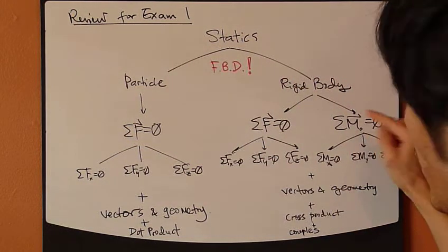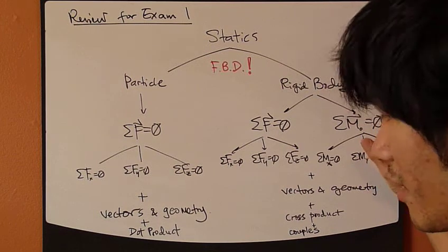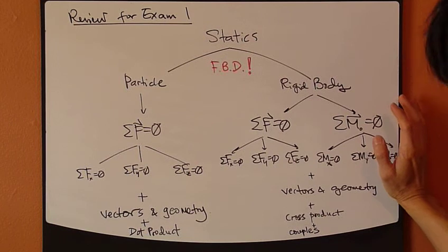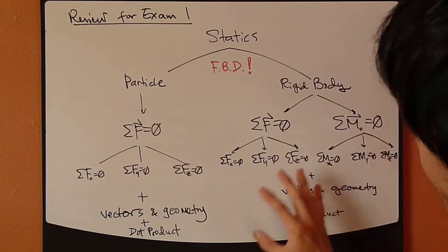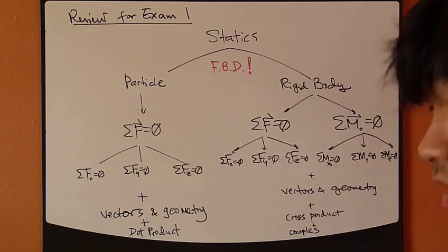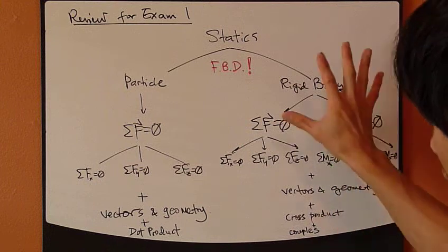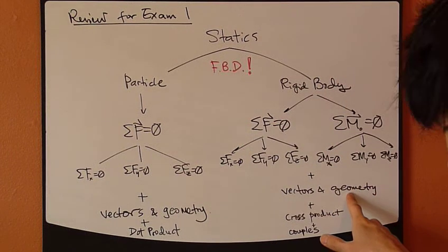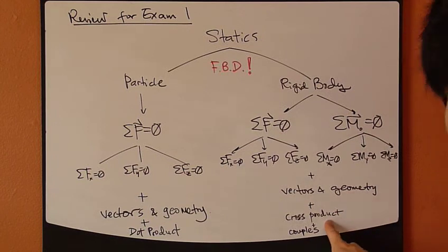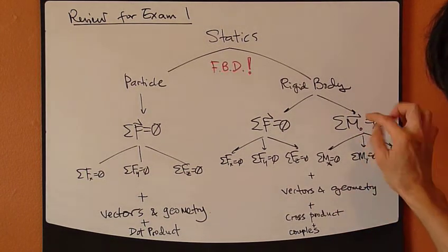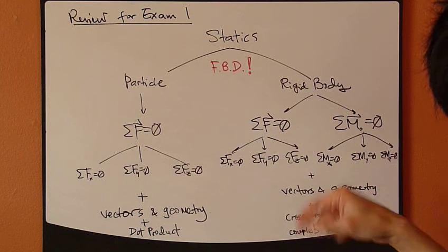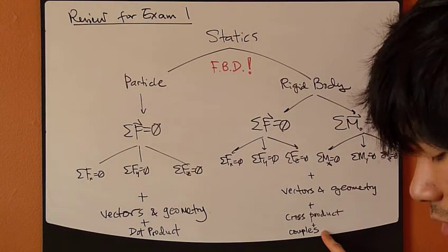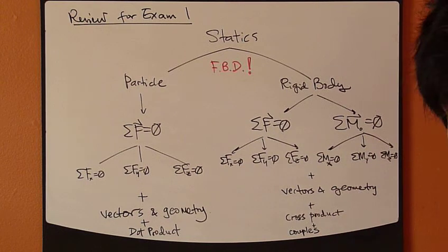And here, the major difference is moments. So, we spend a lot of time talking about moments, as well as couples. And also, a few other auxiliary things that will help you analyze rigid body problems. Again, vector properties, geometry, cross products now. Because we do a lot of cross products in talking about moments, R cross F. Things like that, as well as couples. So, we'll talk about different kinds of couple force systems, how to reduce them.